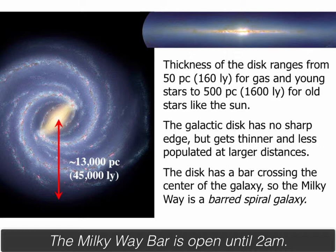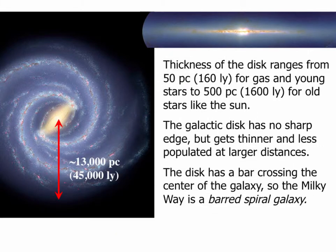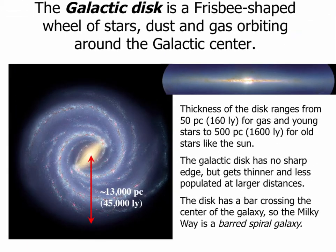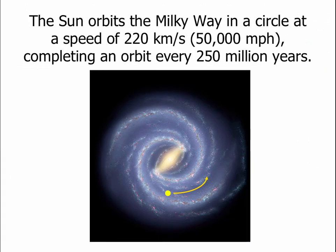In the next mini-lecture, when we look at nearby galaxies, we'll see that a lot of spirals do have bars, although not all of them do. The Sun orbits the Milky Way in almost a perfect circle, and at our distance it takes about 250 million years to go around the galaxy. So over its 4 billion year lifetime, the Sun has only completed about 16 complete orbits — basically the Sun is 16 galactic years old. The Sun's speed is about 220 kilometers per second, or 50,000 miles per hour, and we can measure that using the Doppler shift in nearby galaxies.